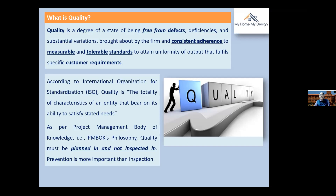If slight variations exist, they should be within tolerable standards — for example, in terms of millimeters. That is why quality should be free from defects and should adhere to measurable and tolerable standards as per customer requirements. According to the International Organization for Standardization (ISO), quality is the totality of characteristics of an entity that bear on its ability to satisfy stated needs.